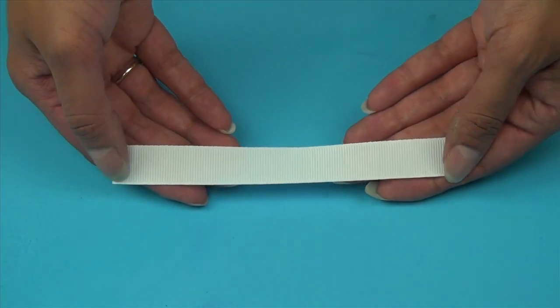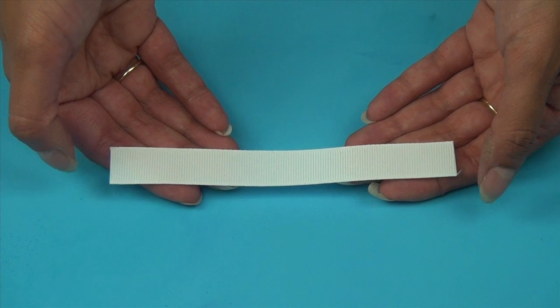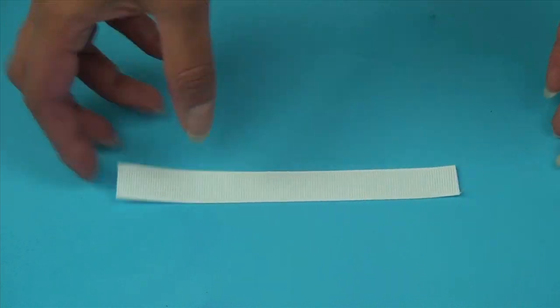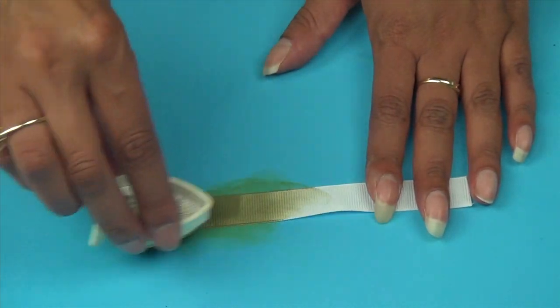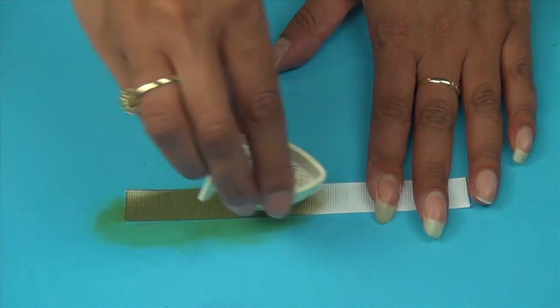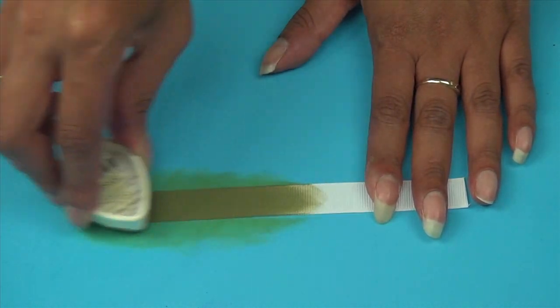Next, for the ribbon embellishment, I've cut a piece of white grosgrain ribbon slightly longer than the width of the card. And we're going to color this with Versamagic and Spanish olive. Just apply directly to the ribbon to get that nice, deep green color.